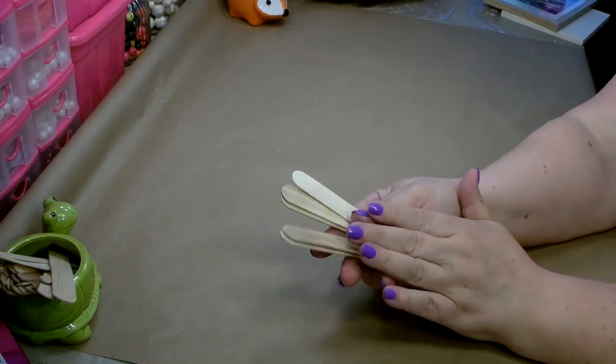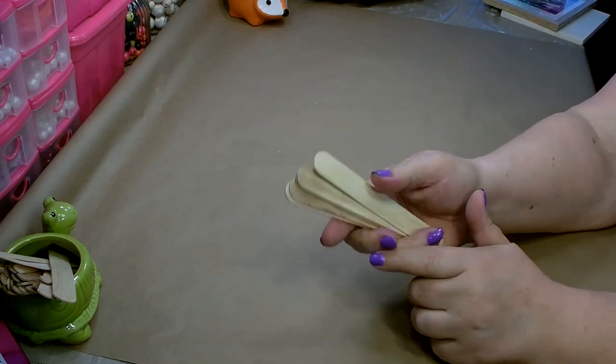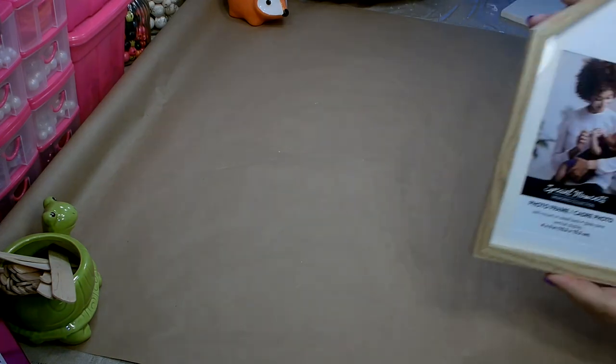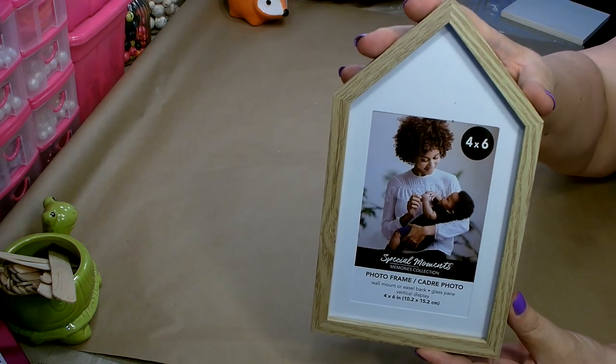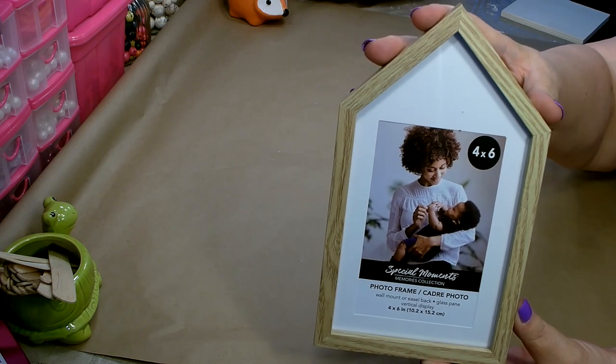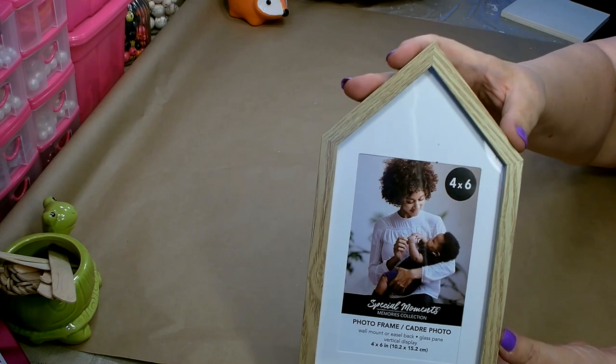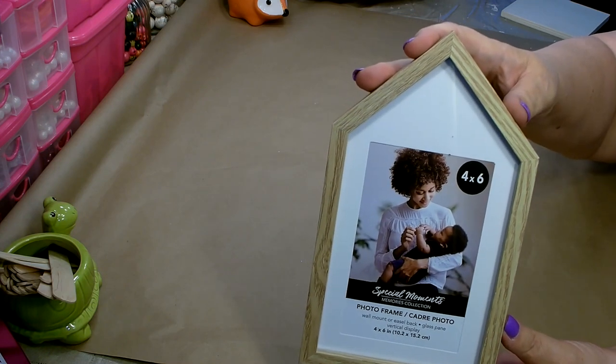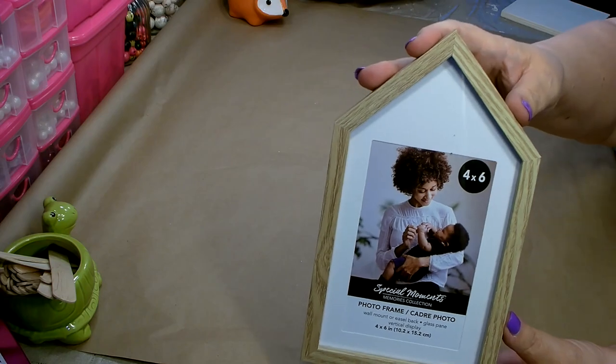You're going to need 12 of the large craft sticks that you can get from Dollar Tree. You're also going to need two of these beautiful photo frames from Dollar Tree. They hold a four by six and are shaped like a house with a faux wood finish. Here is the skew number for these photo frames.